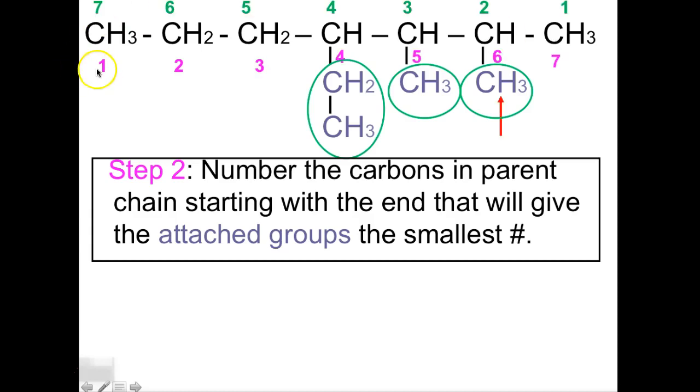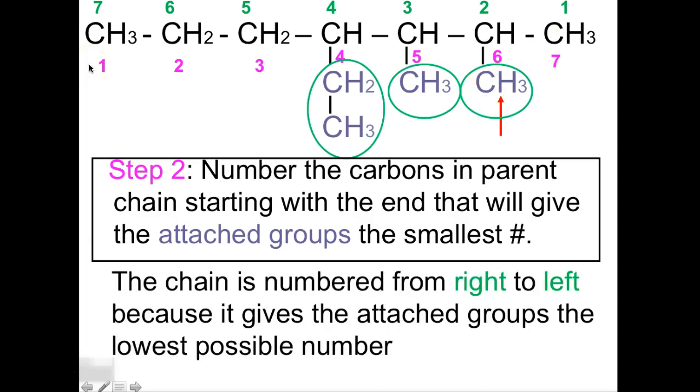So if we did left, we would number one, two, three, four, five, six, seven. This would give a six. If we numbered, if we look at our numbers in green, that gives this a group of two. So we're going to go with the green orientation. So the chain is numbered from right to left because it gives the attached groups the lowest possible numbers.